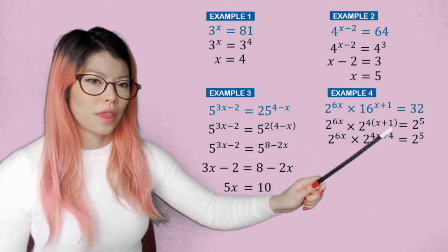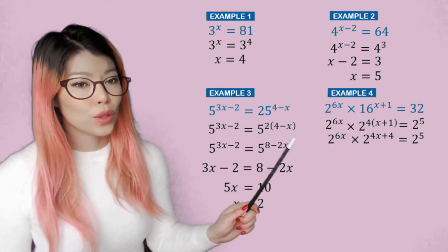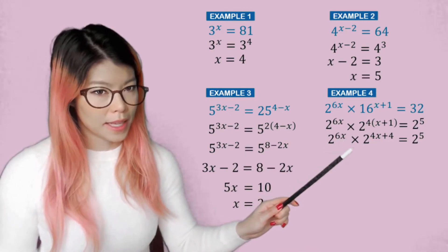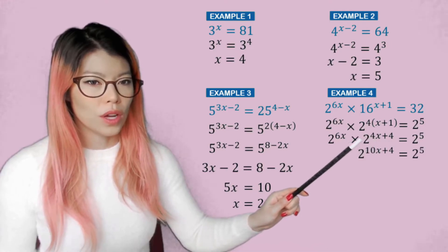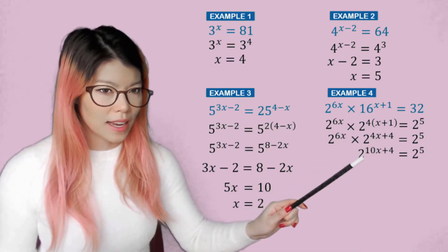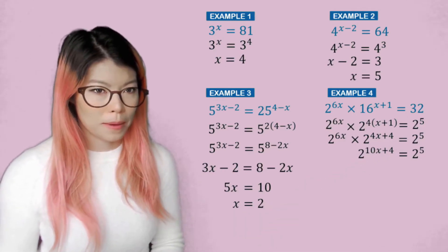So now we can expand the brackets as 4x plus 4. And now we know that we can't equate yet because it's not one thing on each side. There's multiplication on this side. But we know what to do when we multiply two bases that are the same. We add the powers. So 6x plus 4x plus 4. So 6x plus 4x is 10x plus 4.